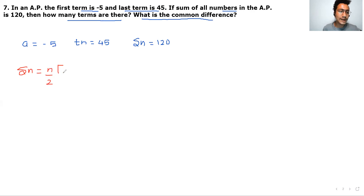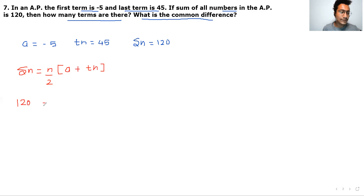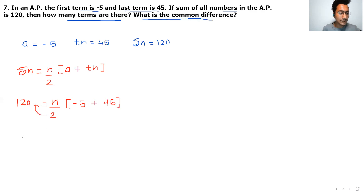Apply the Sn formula: Sn equals n upon 2 times bracket first term plus last term. Sn is 120, first term A is minus 5, and last term Tn is 45. So 120 equals n upon 2 times bracket minus 5 plus 45, giving 240 equals n times 40.